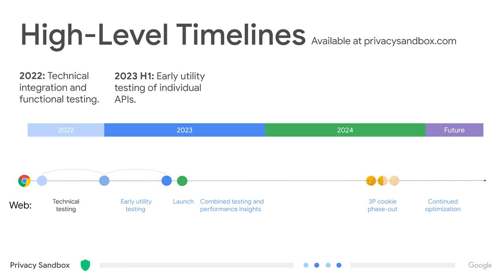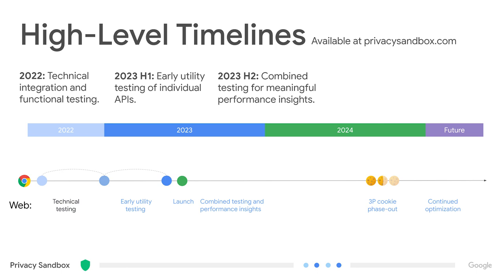For the first half of 2023, it'll be very much test and learn. We expect the testing to be focused on individual APIs to give directional utility learnings, and we'll be increasing traffic exposed to these APIs to a sufficient level at a responsible pace. We're looking forward to feedback in this timeframe to help understand how specific parameters of the API proposals influence the results. In the second half of 2023, we'll launch the APIs to all Chrome users, which will enable testing of the sandbox technologies at scale, in combination and across the ecosystem.